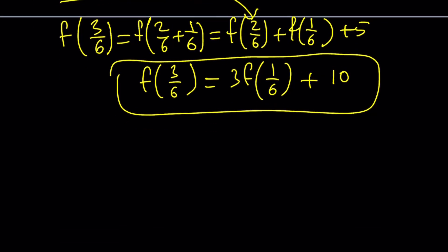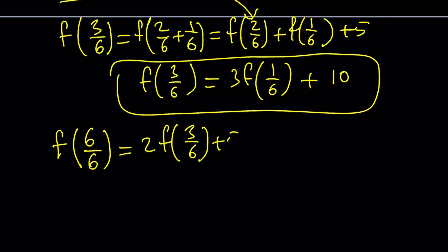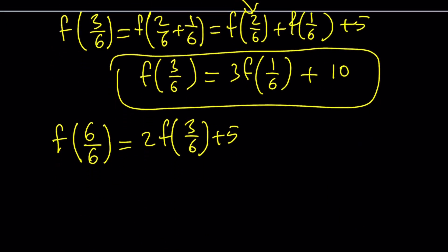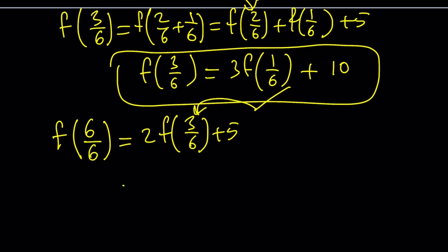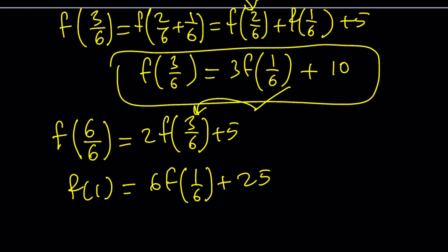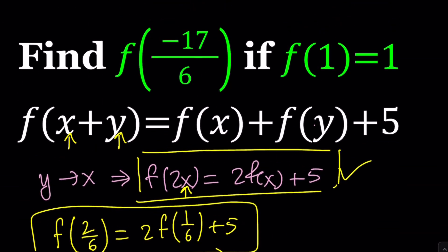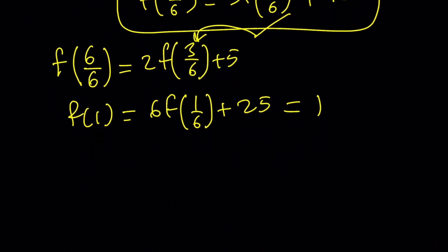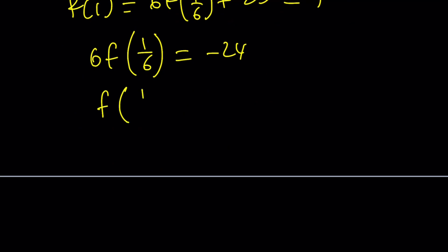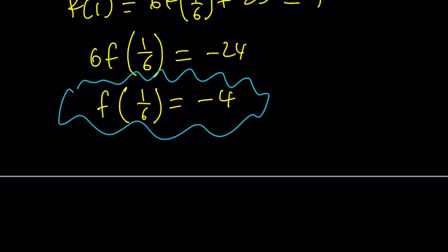The next step is to double 3 over 6. f of 6 over 6, which is f of 1, can be written as 2 times f of 3 over 6 plus 5 from the doubling formula. Replacing f of 3 over 6 gives us 6 times f of 1 over 6 plus 20 plus 5, which is plus 25. Since f of 1 equals 1 — it's given — we subtract 25 to get negative 24, then divide both sides by 6: f of 1 over 6 equals negative 4.